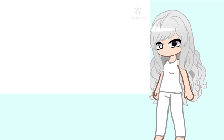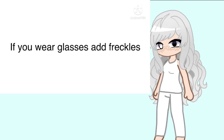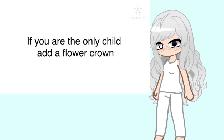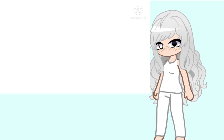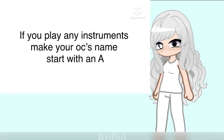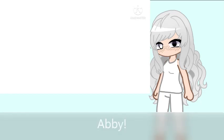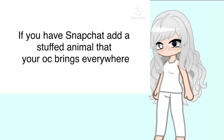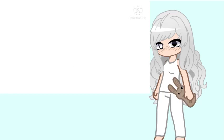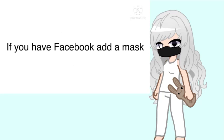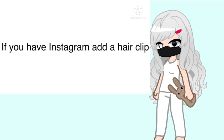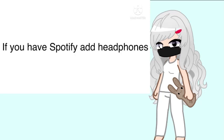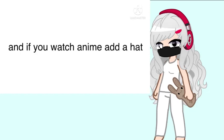Lastly, any extras. If you wear glasses, add freckles. If you are the only child, add a flower crown. If you play any instruments, make your OC's name start with an A. If you have Pinterest, add earrings. If you have Snapchat, add a stuffed animal that your OC brings everywhere. If you have Facebook, add a mask. If you have Instagram, add a hair clip. If you have TikTok, add a bow. If you have Spotify, add headphones. And if you watch anime, add a hat.